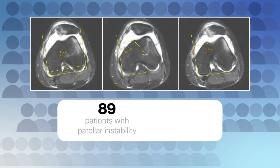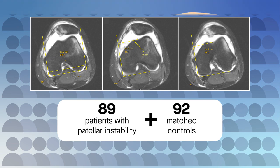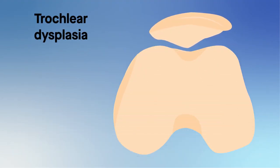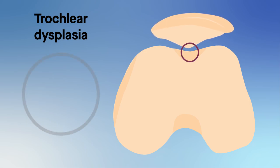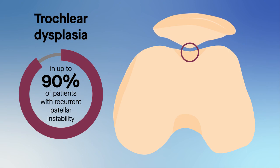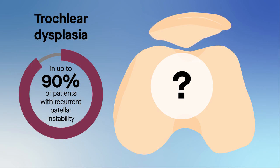Researchers examined knee MRIs of 89 patients with patellar instability and 92 matched control patients. Previous studies have shown that trochlear dysplasia — a condition in which the trochlea is not properly shaped to contain the patella — is present in up to 90% of patients with recurrent patellar instability. That motivated the team to determine the effects of trochlear dysplasia on the TT-TG measurement.